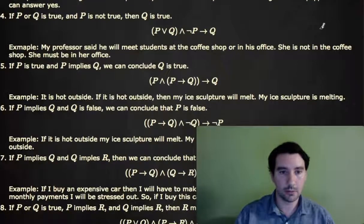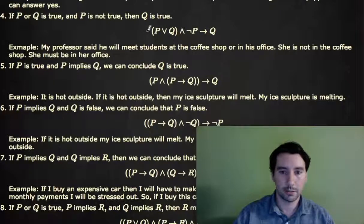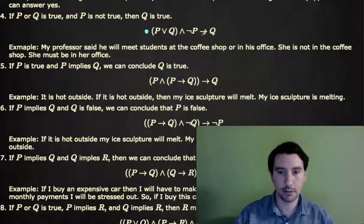If P or Q is true, and P is not true, then I know that Q is true. So to say P or Q, and not P, then I know Q.